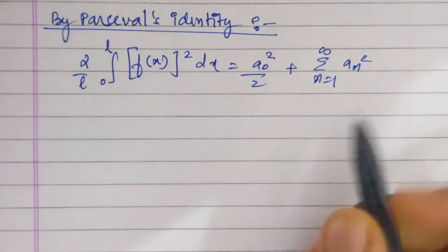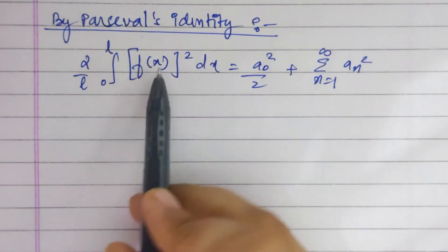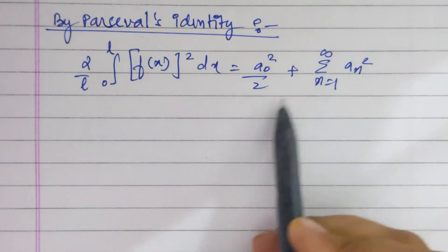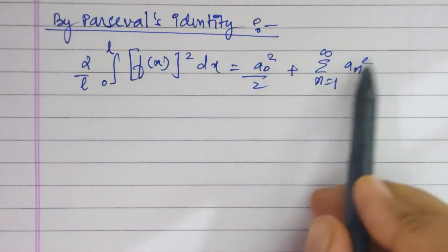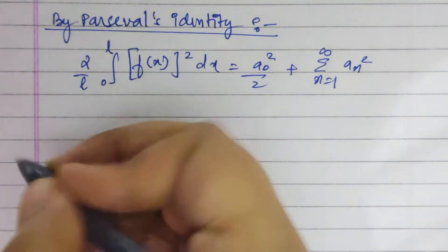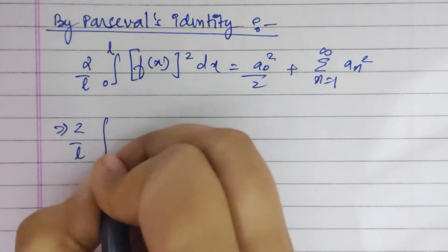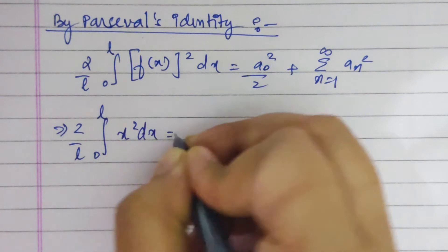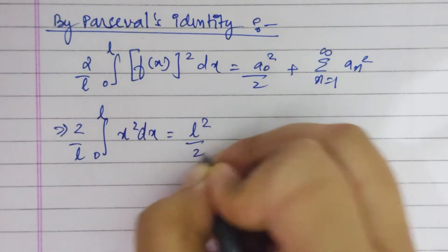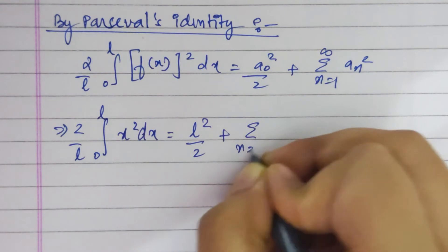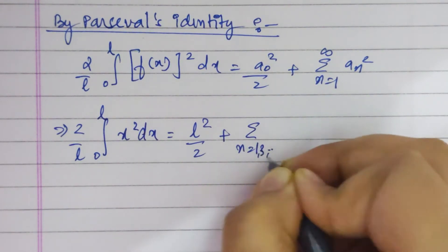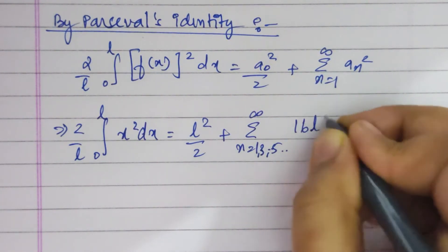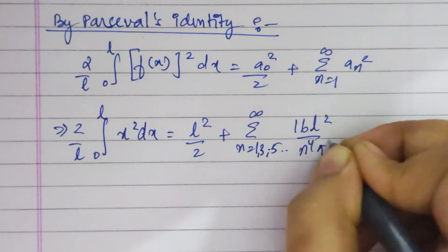Now applying Parseval's identity: 2 by l from 0 to l of f(x) squared dx equals a naught squared by 2 plus summation from n equals 1 to infinity of a_n squared. Evaluating from 0 to l, x squared dx equals l squared by 2 plus summation over n equals 1, 3, 5 up to infinity of 16 l squared by n to the power 4 times pi to the power 4.